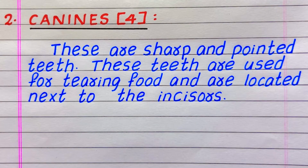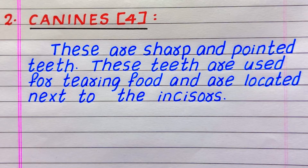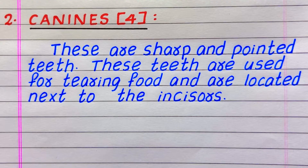The second type of teeth in humans are canines. They are four in number. These are sharp and pointed teeth. These teeth are used for tearing food and are located next to the incisors.